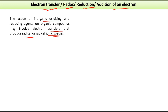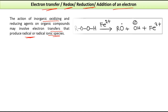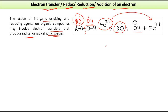One approach involves inorganic oxidizing or reducing agents acting on organic compounds, producing radical or radical-ionic species. For example, Fe²⁺ can donate one electron to the O–O bond of ROOH. This breaks the bond to give RO• and HO•. The HO• accepts the electron to become OH⁻, and RO• remains as the radical. Fe²⁺ is oxidized to Fe³⁺, acting as a reducing agent.